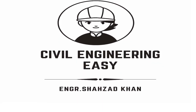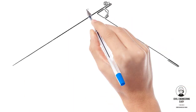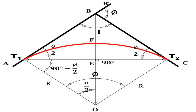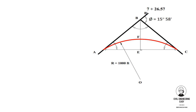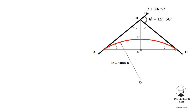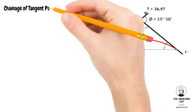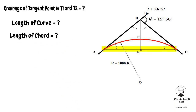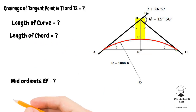Welcome back to Civil Engineering Easy. Today I will discuss a simple problem related to the horizontal simple curve. It is given that two tangent lines intersect at a road chainage of 726.57 feet, and it is proposed to insert a circular curve of radius 1000 feet. The deflection angle is 15 degrees 58 minutes. We need to find the chainage of the tangent points, length of curve, length of chord, mid-ordinate, and external distance required for setting out the curve in the field.